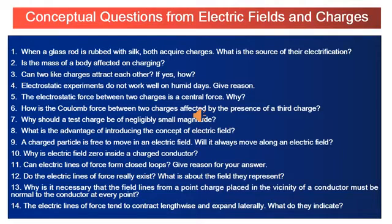An important question asked in CBSC 2009: why must field lines from a point charge placed near a conductor be normal to the conductor at every point? If the field lines are not normal, the electric field E would have a tangential component, which would make electrons move along the surface creating surface currents, and the conductor would not be in equilibrium. Therefore, field lines near a conductor must always be normal to its surface at every point.